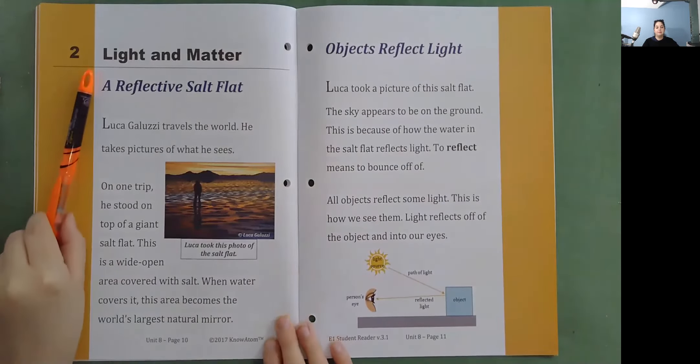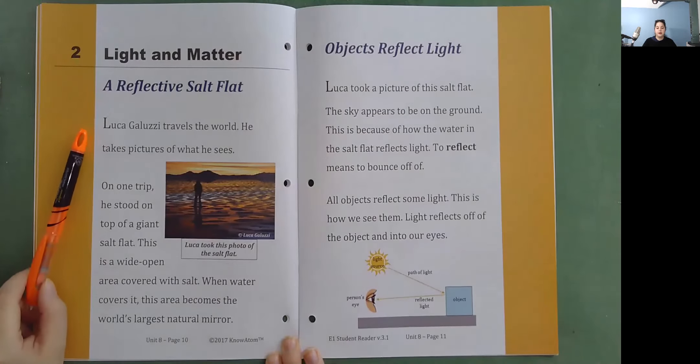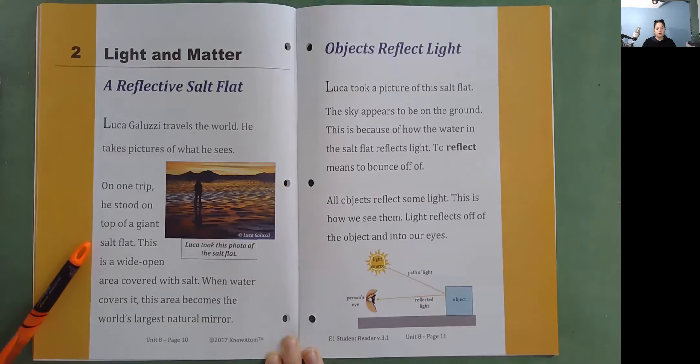Light and matter. A reflective salt flat. Luca Galussi travels the world. He takes pictures of what he sees. On one trip, he stood on top of a giant salt flat. This is a wide open area covered with salt. When water covers it, this area becomes the world's largest natural mirror. Luca took this photo of the salt flat.